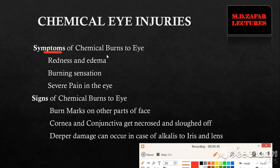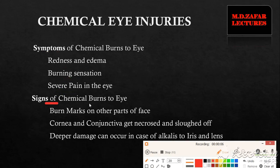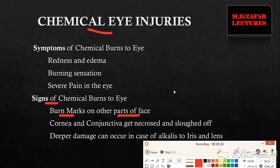The symptoms of chemical burn to the eye include redness and edema, burning sensation in the eye, and severe pain. The signs of chemical burn include burn marks to other parts of the face, because chemical eye injuries often result from criminal assault where acid or alkali is thrown at the face. In the eye, the cornea and conjunctiva being the most superficial structures get affected, become necrosed, and their epithelium gets sloughed off.